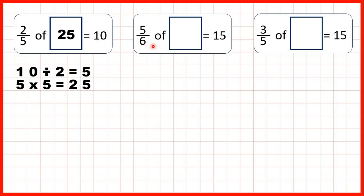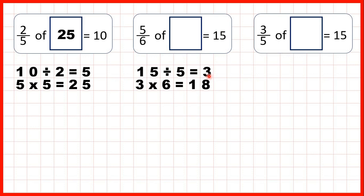Now, five-sixths of what equals 15? Again, we've got a missing number problem, so rather than dividing by the denominator, we divide by the numerator: 15 divided by 5 is 3. Then we take that 3 and multiply it by the denominator. That gives us 18 as our total quantity. We can check: 18 divided by 6 is 3, and 3 times 5 is 15.